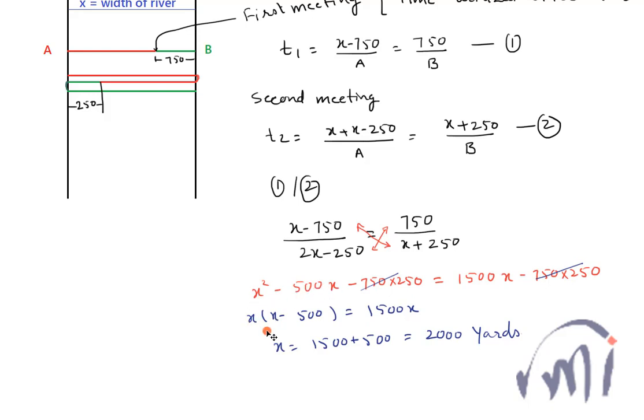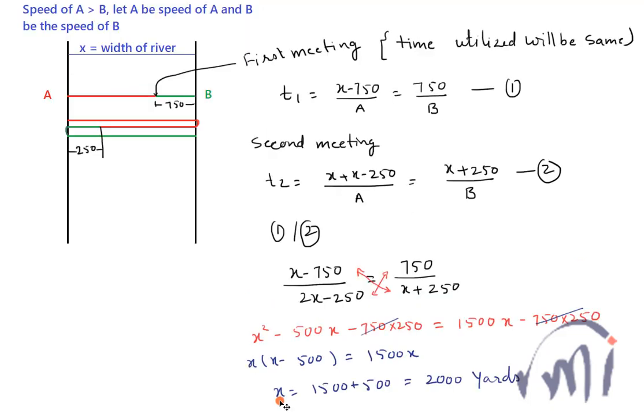This minus 750 times 250 will cancel. From these two terms I can take x common, so x times x minus 500 equals 1500 times x. This x will cancel. From here I will get x equals 1500 plus 500. So the value of x, which is the width of the river, equals 2000 yards.